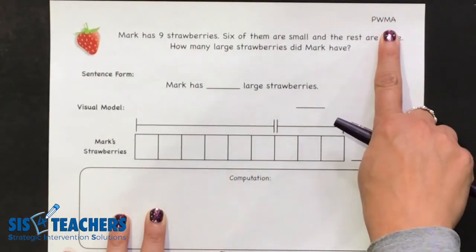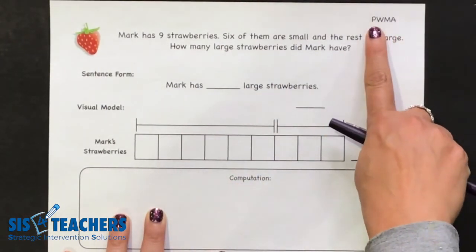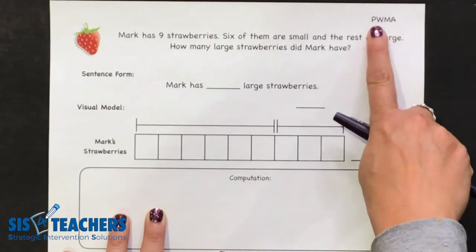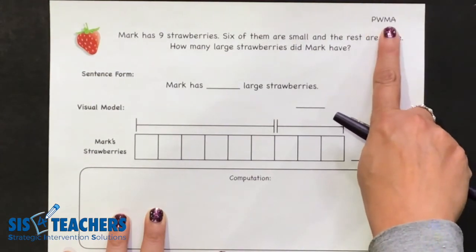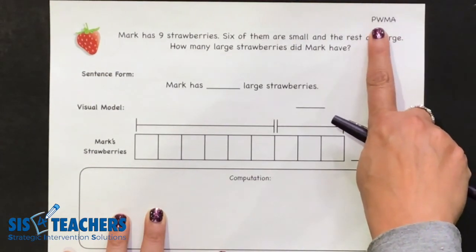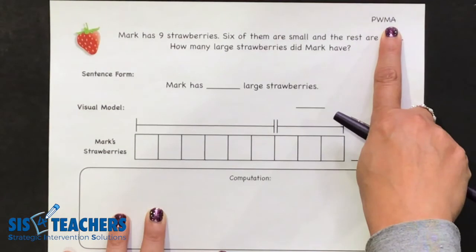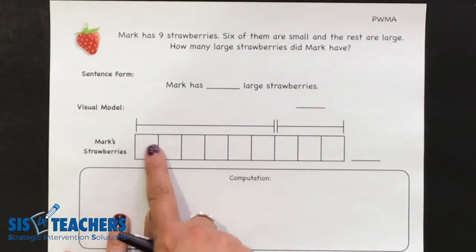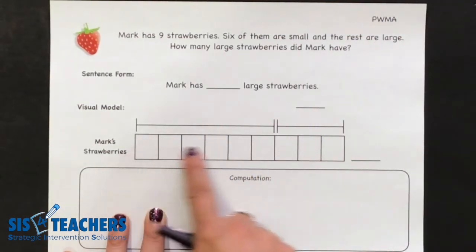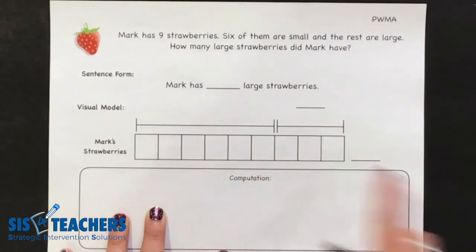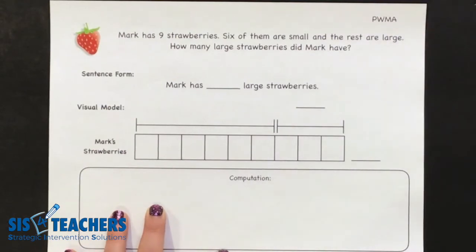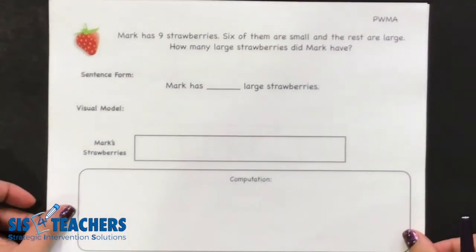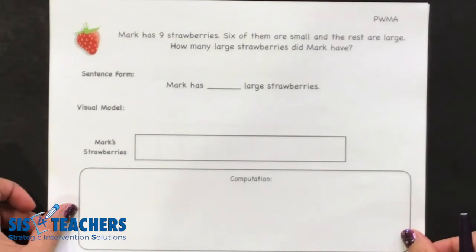The example we're going to be showing today is using a part-whole missing addend. The code above here helps teachers to understand the different types of story problems. In this example, we'll be showing you how to do it in a proportional way and also a non-proportional way, so we're going to show the example with both differences.